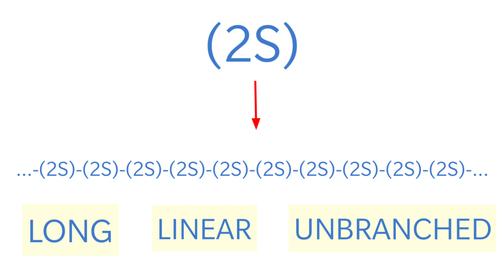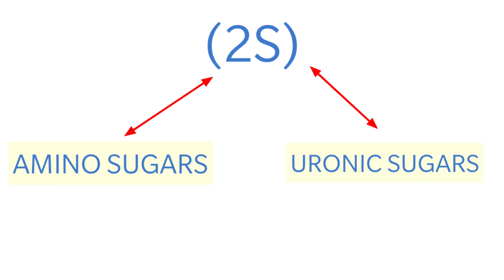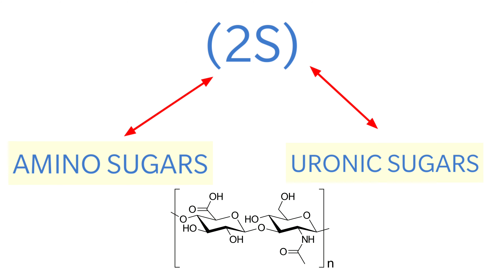The two sugars of the disaccharide are an amino sugar and a uronic sugar. This disaccharide of amino sugar and uronic sugar is formed in a long, linear, unbranched pattern — this repeated structure is what we call a mucopolysaccharide, or glycosaminoglycans (GAGs).